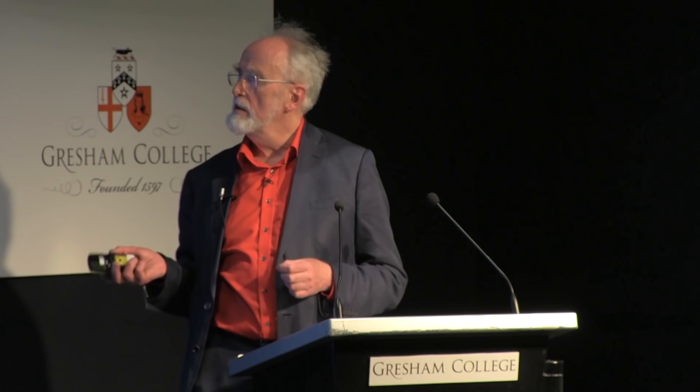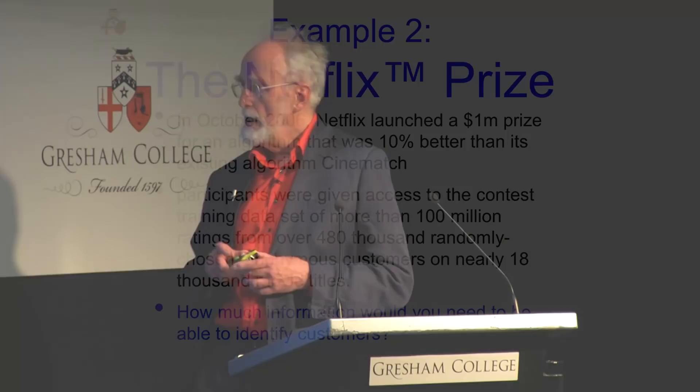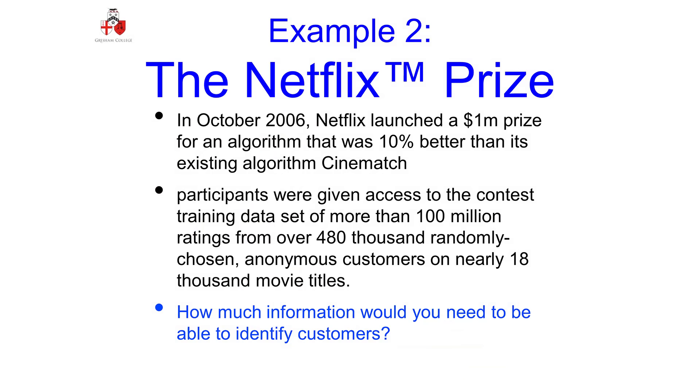Netflix — you all know what Netflix does. They launched a big prize for improvements to its algorithm, for taking data about what pictures people had enjoyed and rated highly and recommending other pictures to them that they might want to rate. Participants, in order to compete, were given access to a training data set: 100 million ratings from 480,000 randomly chosen customers. And that's all you get — just the movie titles and the ratings.